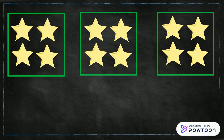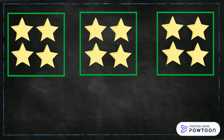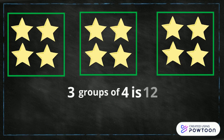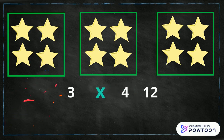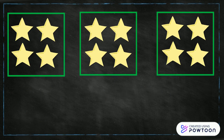Now I'm going to show you a little magic trick. This is called a times sign or a multiplication sign. It looks very similar to the letter X. We said earlier that we can see 3 groups of 4 is 12. You can take the 'groups of' away and replace it with the times sign, and take the 'is' away and replace it with an equal sign. Now you have a multiplication sum, so it reads 3 times 4 equals 12.